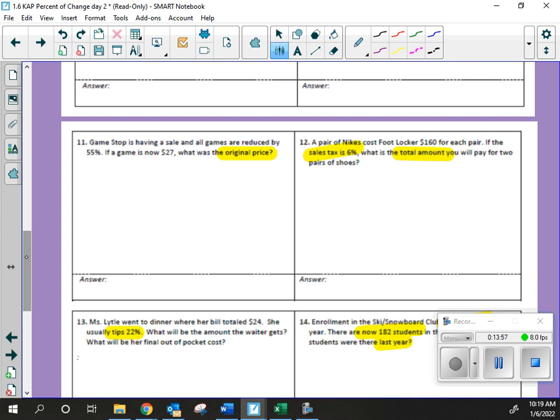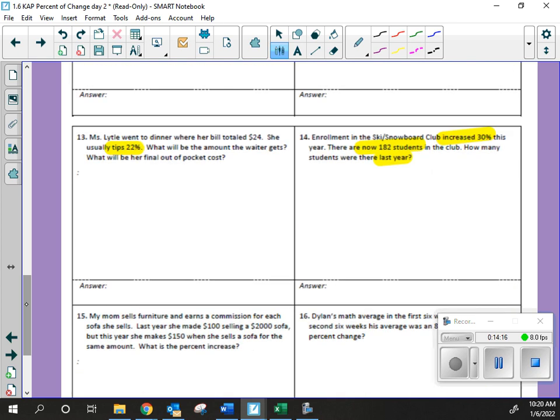Sales tax, okay? Some of us know, some of us don't. For sales tax, that is increase or decrease? Increase. Increase. That is an increase of that amount. So, when you're finding the total amount, that's going to be not just the tax, but also the original. Something you have to add. Okay? Tips, increase or decrease? Increase. Increase. Number 14, it says that it's increased by 30%, and now there's 182. You have to find that original amount. So, that's like that third one you just did.